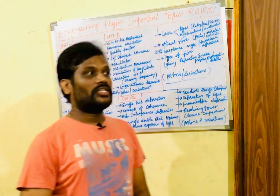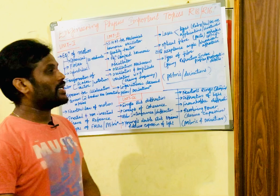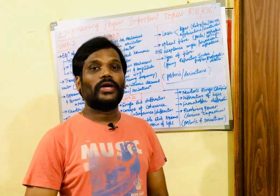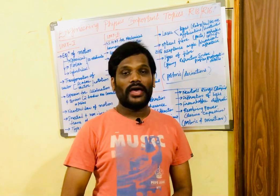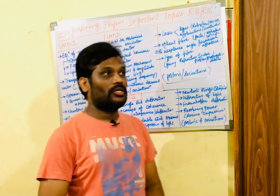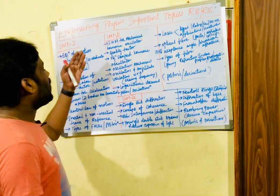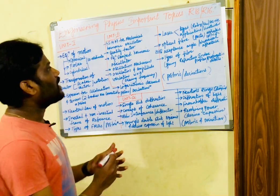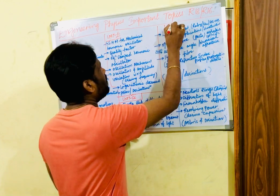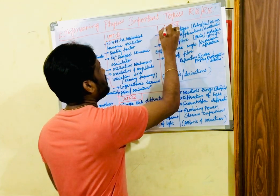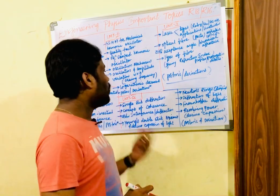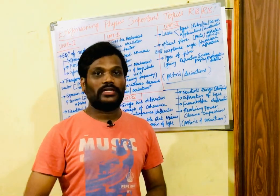Please listen to each and every point as I have taken into consideration only 4 units here today, since you have less time and cannot work out all 5 units. I have selected the short units and very important questions which have been asked for many years. I have considered Unit 1, Unit 2, Unit 4, and Unit 5 — I have skipped Unit 3 here. I am going to cover only these 4 units' important questions. If you are interested, you can go with even the 3rd unit as per the syllabus copy.